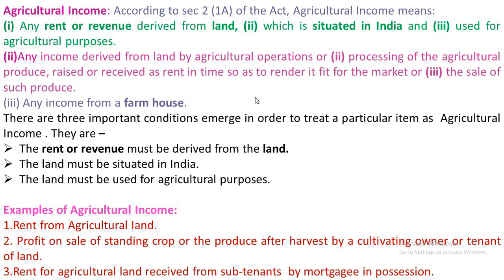Examples of Agricultural Income: Number 1 — Rent from Agricultural Land: Any rent received from agricultural land is to be treated as agricultural income. Number 2 — Profit on Sale of Standing Crop or the produce after harvest by a cultivating owner or tenant of the land: Any income derived from the sale of standing crop is to be considered as agricultural income.